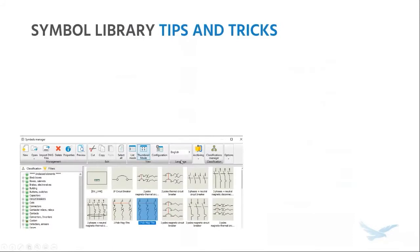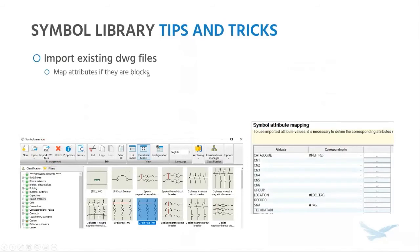I do have a few tips and tricks for the symbol library. Out of the box, SolidWorks Electrical comes with a whole bunch of symbols spread across different classes. But if you do have custom symbols created, you can import existing DWG files. If these DWG files happen to be blocks and they have attributes in them already, you get the opportunity to map those attributes to SolidWorks Electrical counterparts. Just like with title blocks, make sure that these symbols are created in model space, not paper space, in their DWG files.